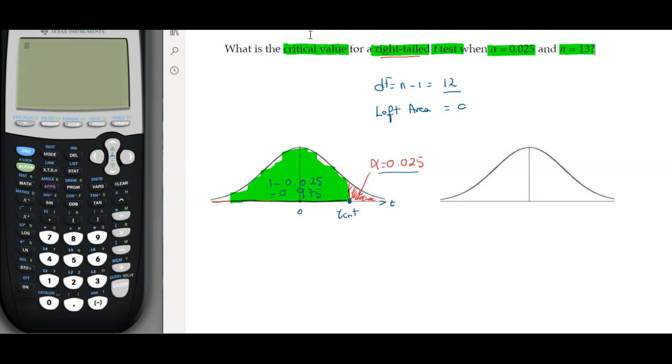The left area is 0.975. I have this area and the degree of freedom, so now I can input them to the calculator to get my critical point. Let me turn on the calculator. I'll go to the distribution menu, which is second and VARS, and then